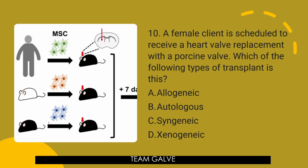When the material used is a porcine valve, is it A, allogenic? Is it B, autologous? Is it C, syngeneic? Or D, xenogenic? The answer is letter D, xenogenic. A xenogenic transplant is between a human and another species. Syngeneic transplant is between identical twins. Allogenic transplant is between two humans. Autologous is a transplant from the same individual. Hence, the answer is letter D.